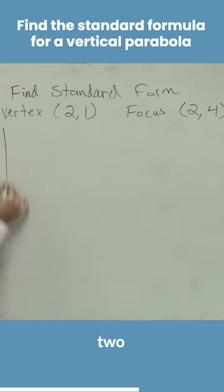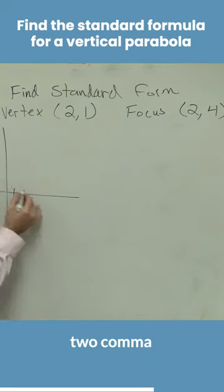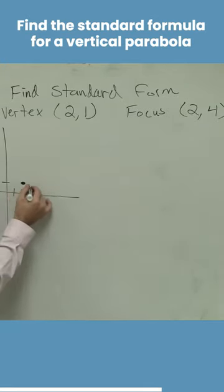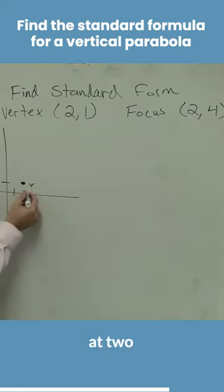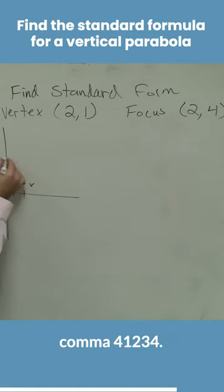So let's plot the two points here. So if I have a vertex at 2 comma 1, and then I have a focus at 2 comma 4. 1, 2, 3, 4.